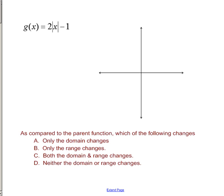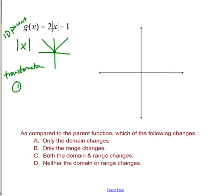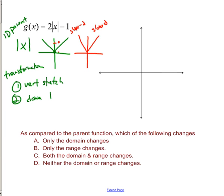Here we have 2 times absolute value of x minus 1. My parent function is absolute value of x — vertex at 0,0, going up with slope 1. Working from x outward: the first transformation is a vertical stretch by factor of 2, and the second transformation is to shift everything down 1. After the vertical stretch, instead of going over 1 up 1, I go over 1 up 2, so the slope is now 2 or negative 2. Then I take that new graph and go down 1, so the key vertex point goes down 1. My slope is 2, so I go up 2 and over 1.